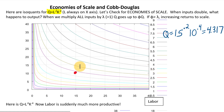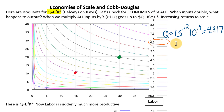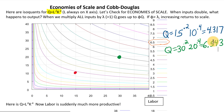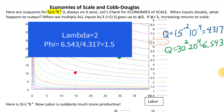Now let's double our inputs: labor to 30, capital to 20. Looking at the isoquants, it looks like we're on the dark gray one at about 6.5 units of output. Let's plug in: q equals 30 to the 0.2 times 20 to the 0.4, which gives about 6.543. We doubled our inputs, which means we doubled our costs. But what happened to output? It less than doubled.